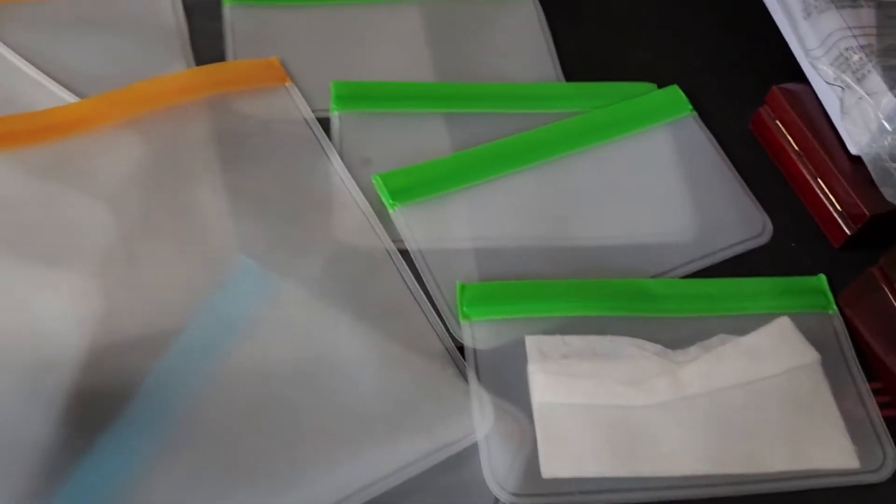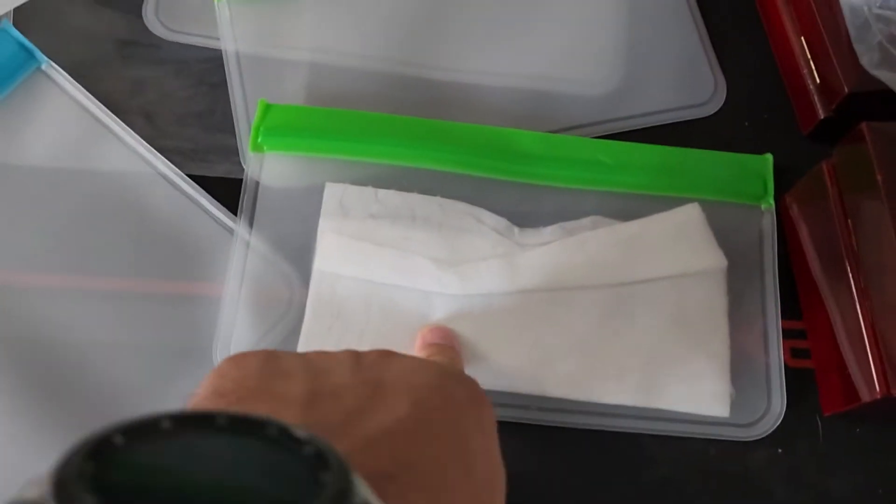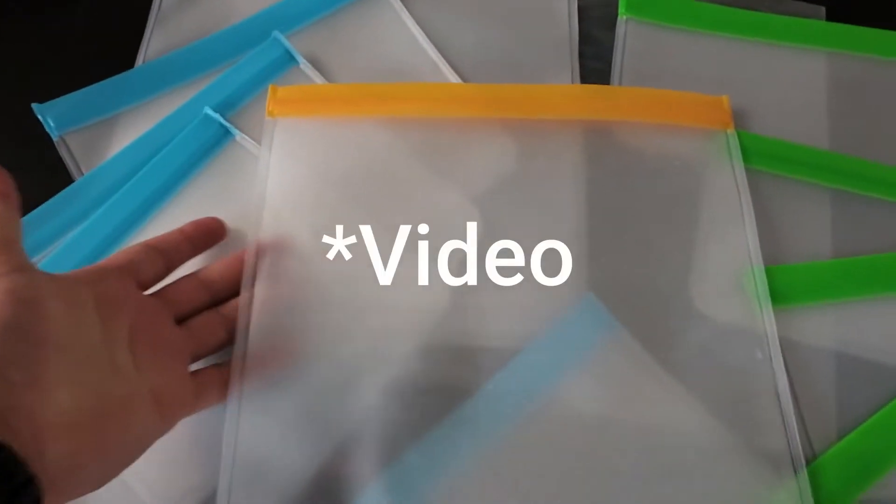Alright, so we have 10 reusable bags right here. As you can see, we used one already for baby wipes, and then we use another one for dog food which I'm going to share with you.